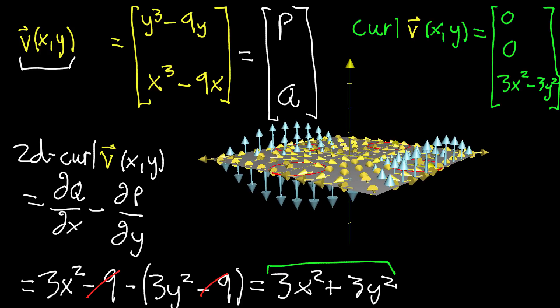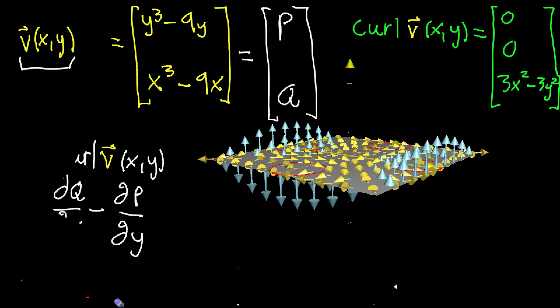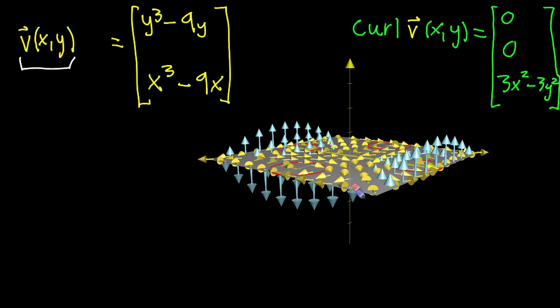And first of all, let me just kind of clear up the board from the computations that we did in the last part. And as I do that, start thinking about how you might want to extend the vector field that I have here that's pretty much two-dimensional into three dimensions.